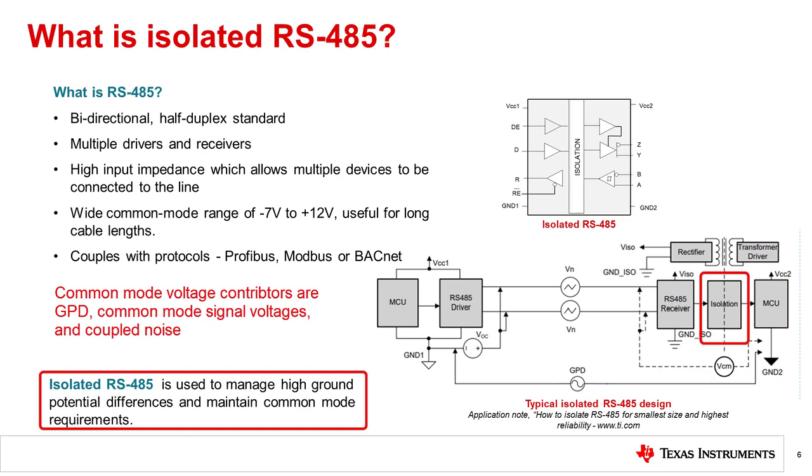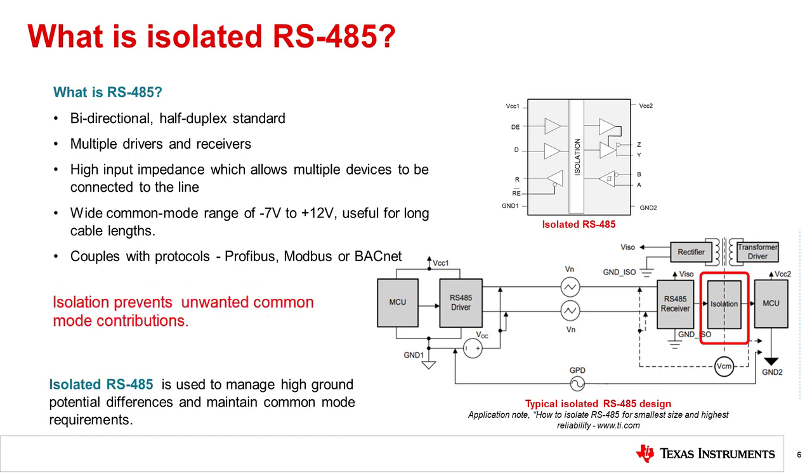As the communication distance between the nodes increases or the environmental noise increases, higher ground potential differences and noise coupling compounds which can disrupt common mode voltage on receiver bus pins. This moves the bus out of its recommended operating condition and causes data corruption or damage to the transceiver. Isolators mitigate these issues by introducing significantly higher impedance to the bus lines and can manage the high ground potential differences while managing signal integrity across the isolation barrier.